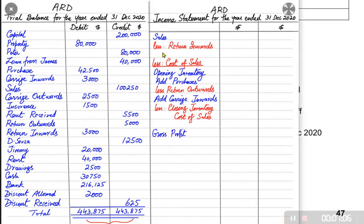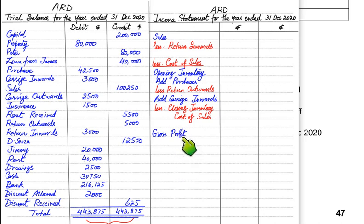Gross profit is not the final profit because we still need to deduct expenses. After gross profit, there are two more adjustments. One is other income — incomes not related to trading activities. This includes items like rent received, commission received, discount received, or fees received. Any income received would typically fall in the other income section.